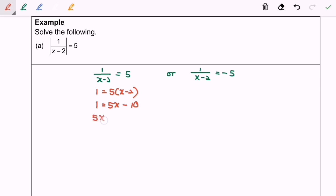Then we'll have 5x equals 11, so finally x will be equals to 11 over 5.